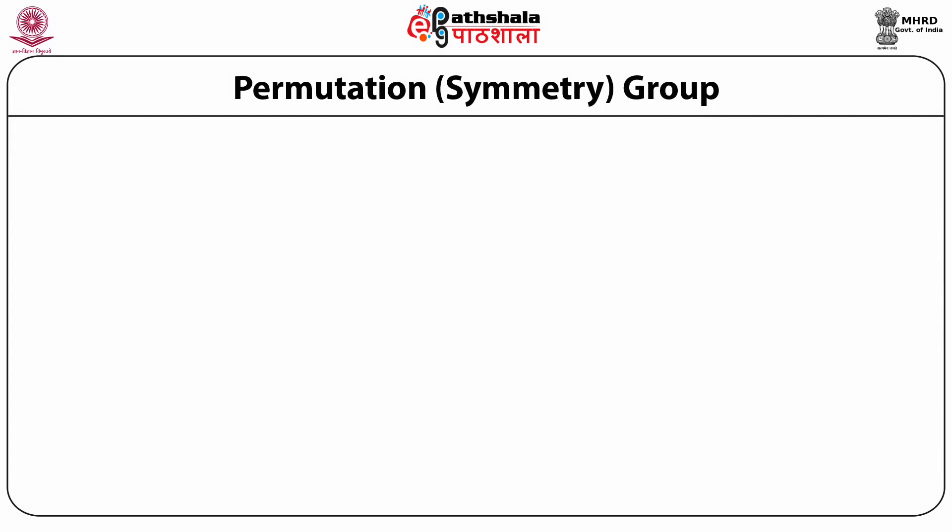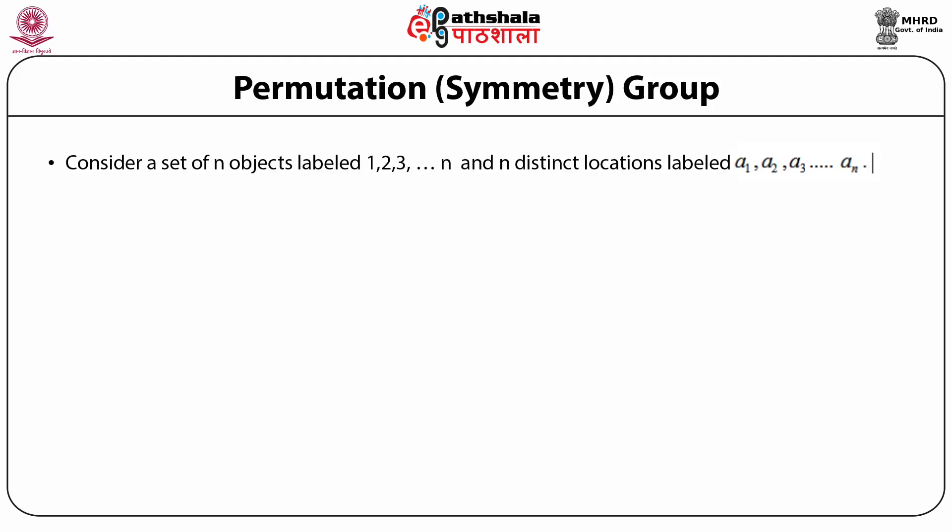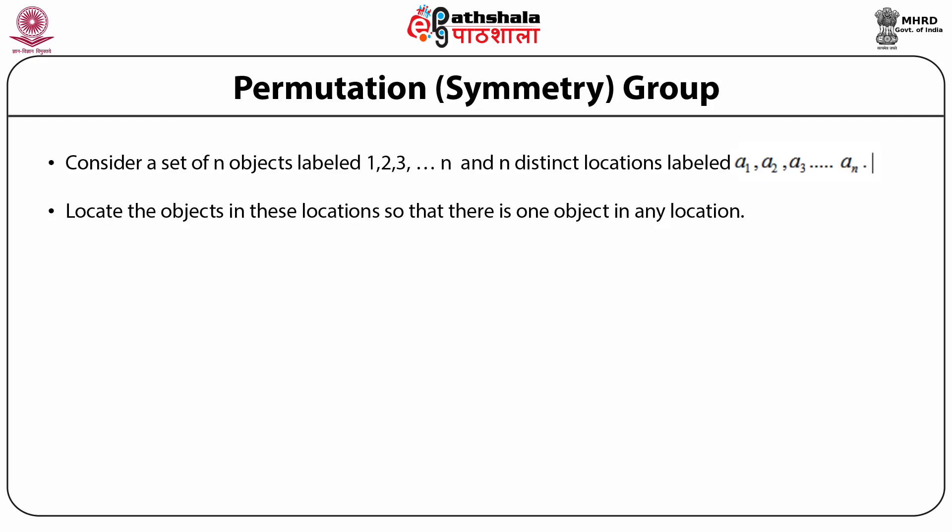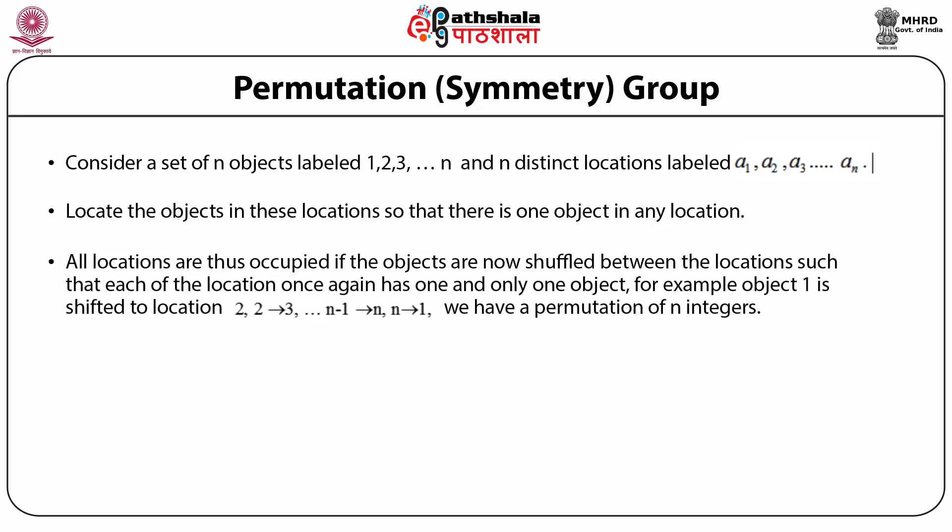The next group we want to discuss is the permutation group, or symmetric group. This is one of the very important groups — we will later see it is called the father of all groups, in the sense that all groups can be considered as a subgroup of the permutation group. Consider a set of n objects labeled 1, 2, 3, ..., n and n distinct locations. If there are n objects, there are obviously n! permutations.